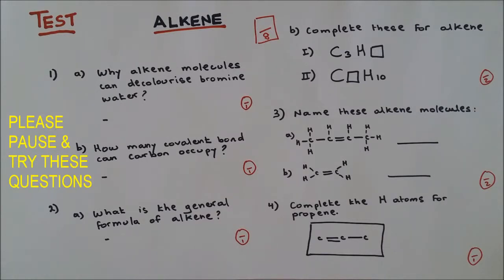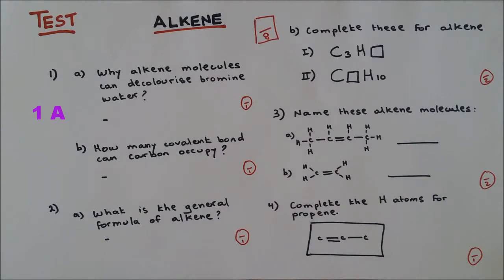Okay, let's do this. Question number one: Why can alkene molecules decolorize bromine water? The answer is because alkene molecules contain a double bond.